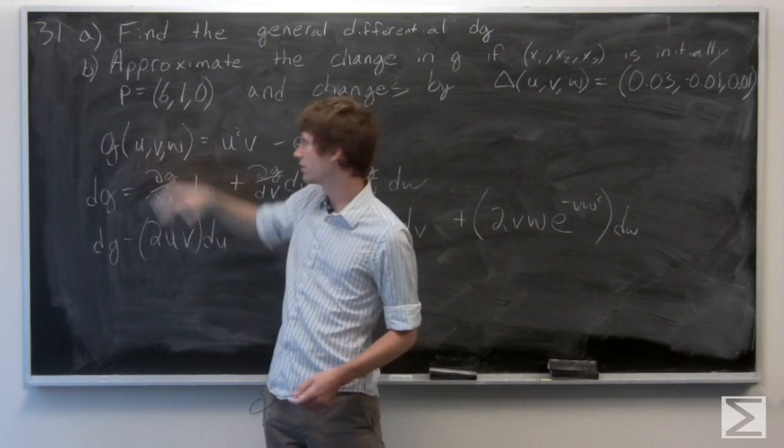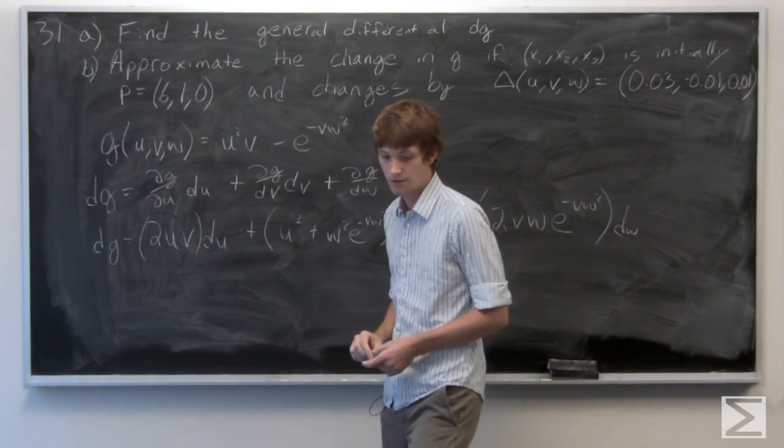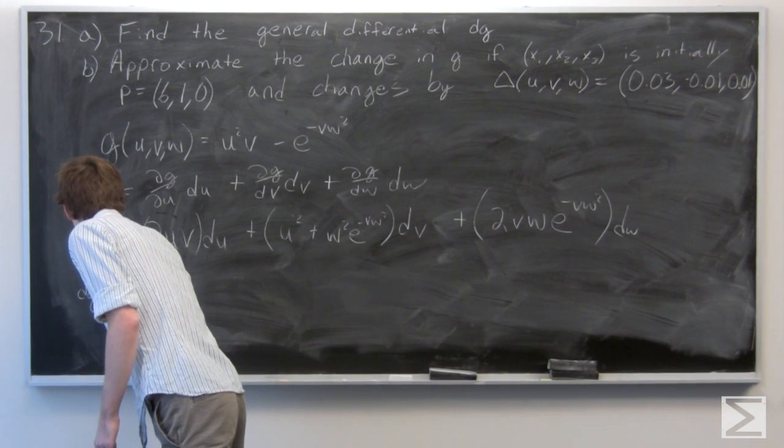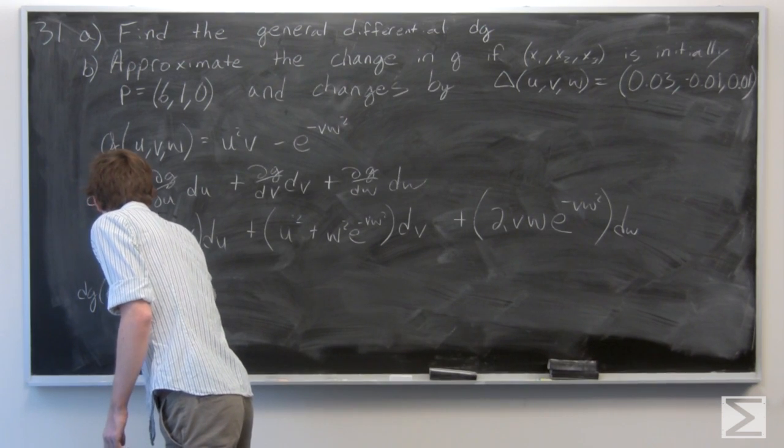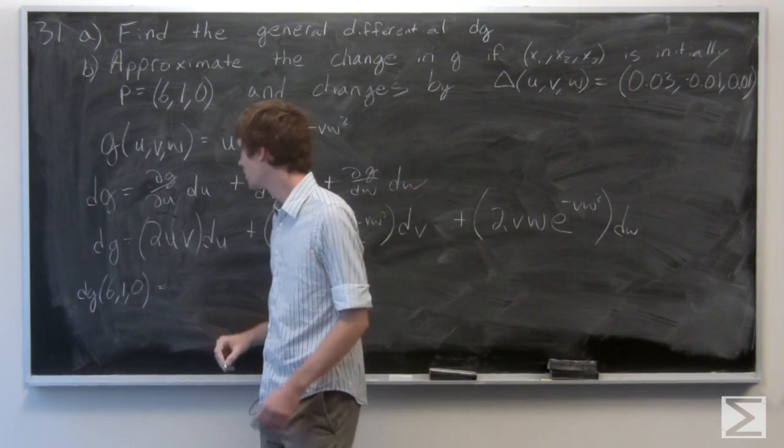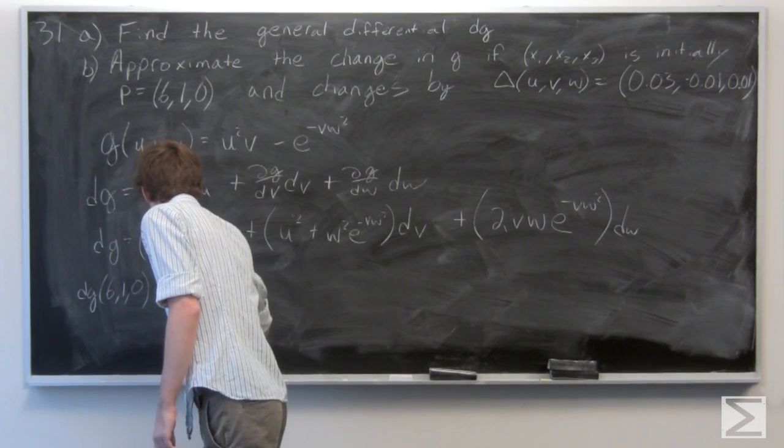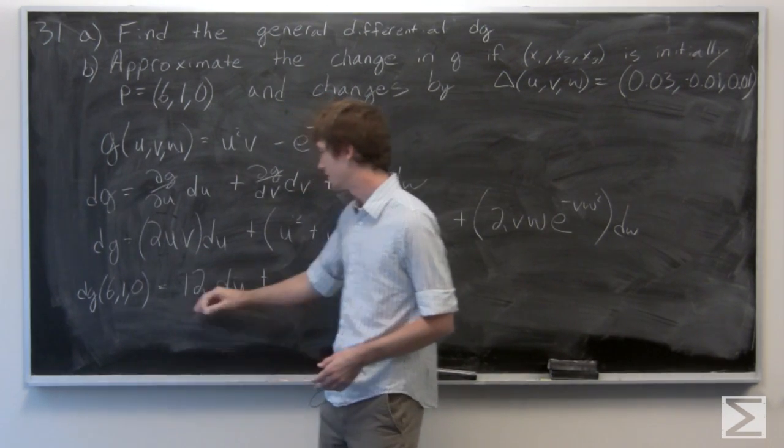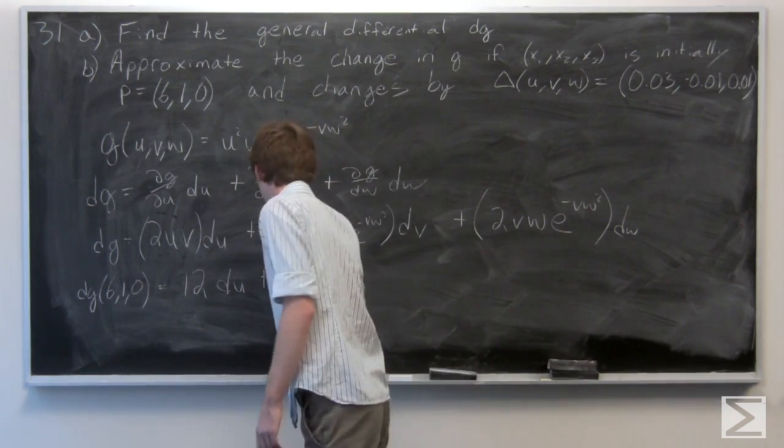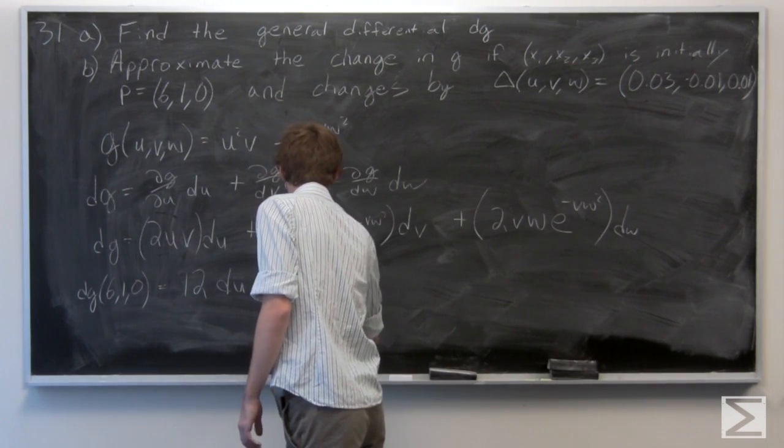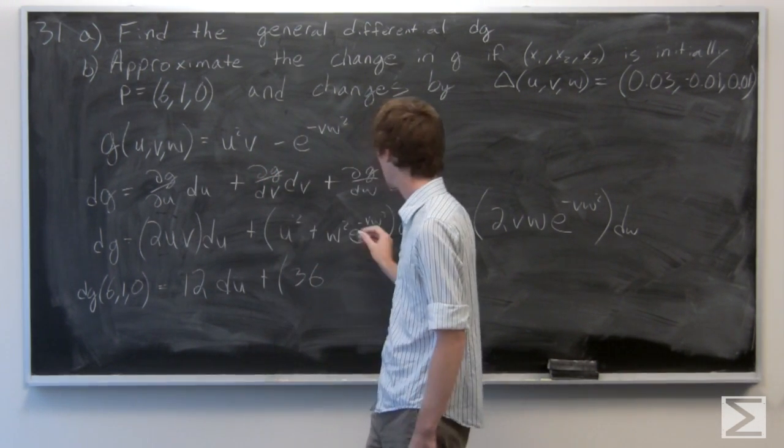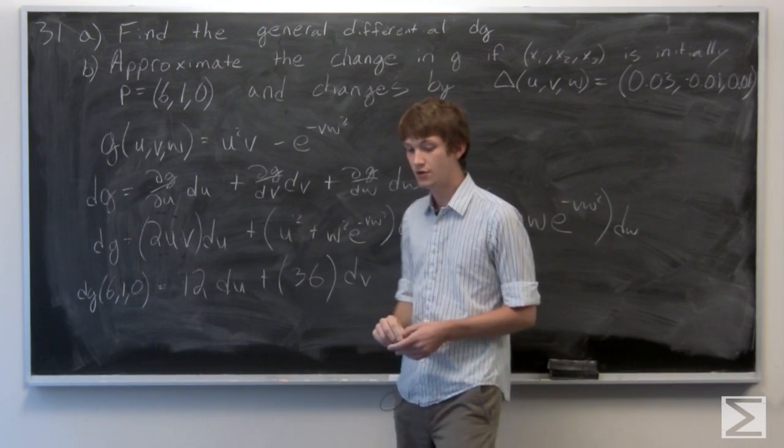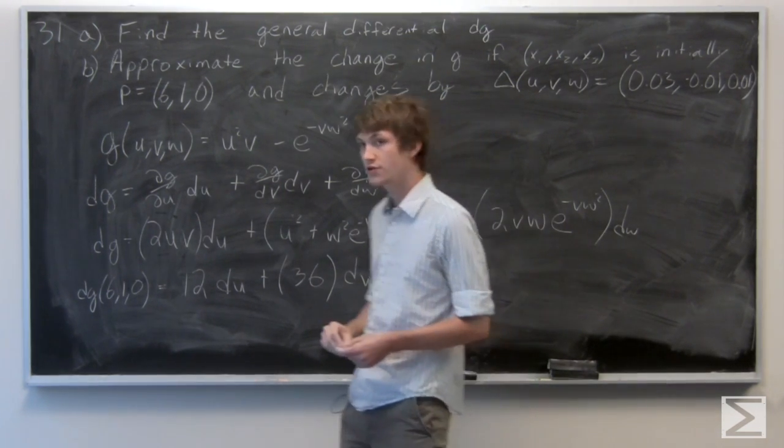And we're going to want to find the general differential at the point (6, 1, 0). We find that the first term is just 12du, the second term is 36dv, and the third term is 0.